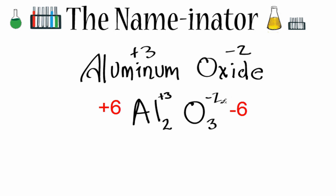When I do that, I have a minus 6 and a plus 6. Those charges balance out, and this is the formula for aluminum oxide. But we can check this using the crisscross method. So to use the crisscross method,